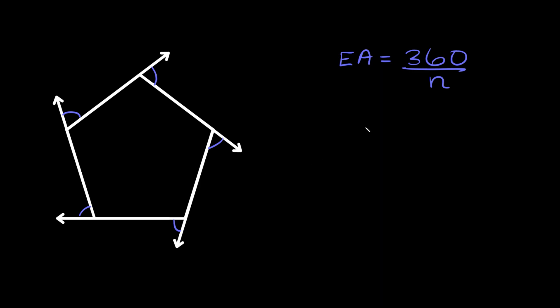So a pentagon obviously has five sides so the exterior angle for this regular polygon would be equal to 360 divided by five which is equal to 72 degrees. So each of these exterior angles are equal to 72 degrees.